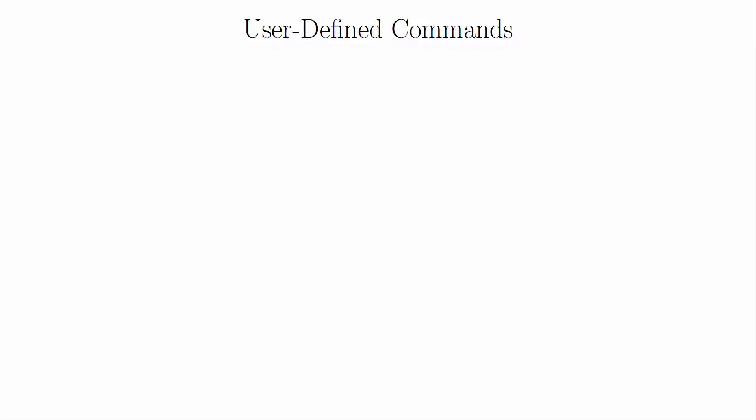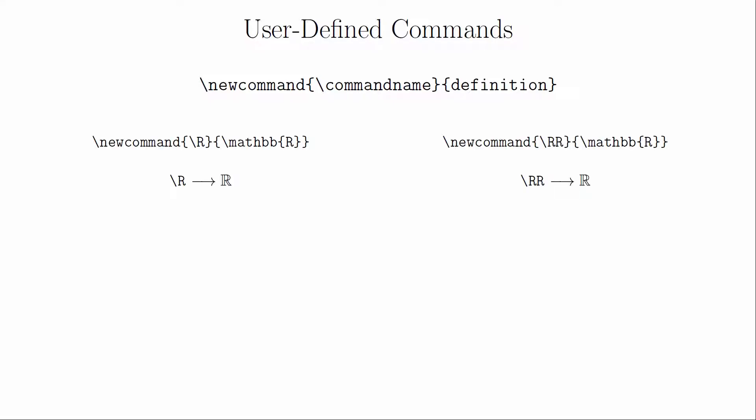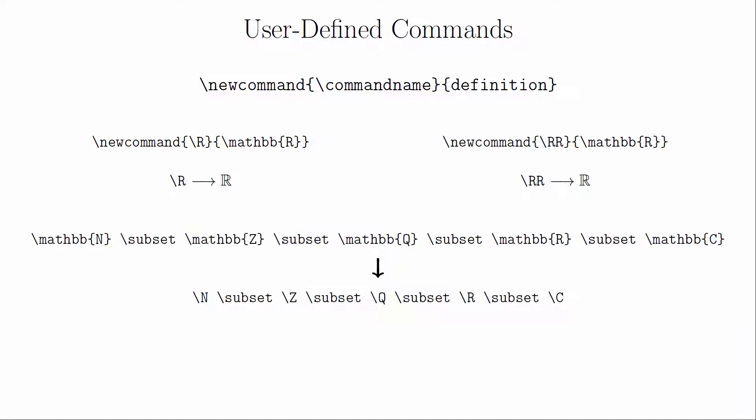One final customization that is often useful is the creation of new commands. These new commands are often useful for symbols and notation that can sometimes be a bit annoying to type out. For example, in real analysis you may eventually get tired of having to write \mathbb{R} to get the symbol for the real numbers. To create a new command you simply put \newcommand into the preamble — the first bracket names the command and the second is the command you want it to execute. The use of \newcommand creates a shortcut that significantly reduces the amount of typing required and can sometimes make your code easier to read.